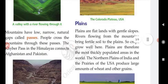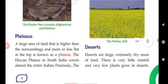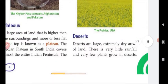Crops grow well here because of this fertile soil. Plains are therefore the most densely populated areas in the world. People live in plain areas because of the fertile soil and the ease of growing crops. The northern plains of India and the prairies of the USA produce a large amount of wheat and other grains.